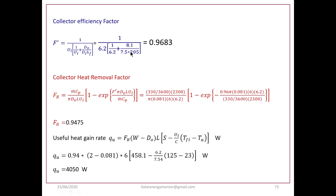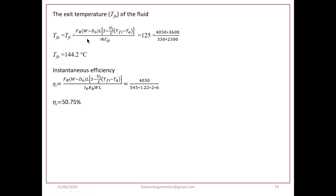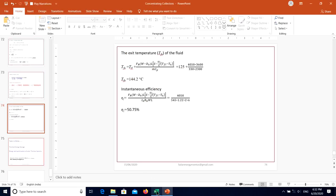Collector efficiency factor F' = 0.96, and collector heat removal factor FR = 0.947. Useful heat gain rate QU = 4050 W. Exit temperature Tfo = 125 + QU/(M-dot·CP) = 144.2°C. Instantaneous efficiency η = QU/(IB·RB·W·L) = 50.75%. This completes the performance estimation for this parabolic trough example.